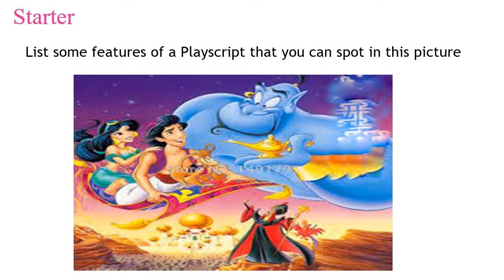Today the starter is: list some features of a play script that you can spot in this picture. In this picture we can see the characters, and when we plan a play script we should keep in mind to include the title, character, dialogue, stage direction and punctuation.